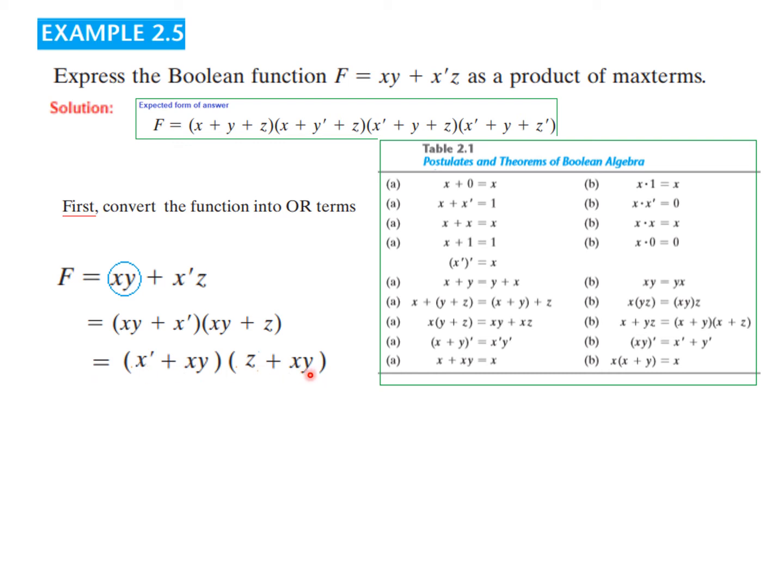So it will be (xy + x')(xy + z). And rearranging, we can write it x' first. And now again, we can apply this formula, same formula. So this can be written as (x' + x)(x' + y). Similarly, z + y, similarly, (z + x)(z + y). So these are now single, single term.